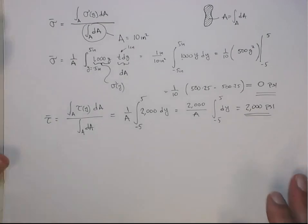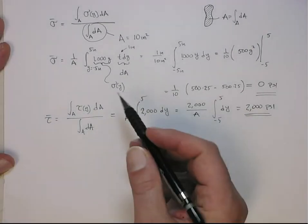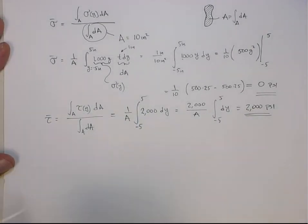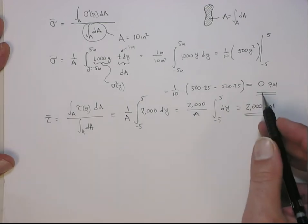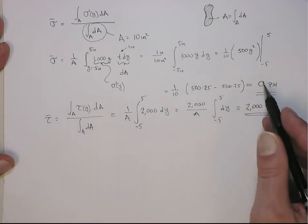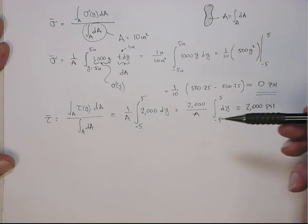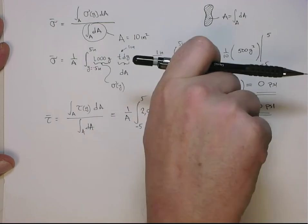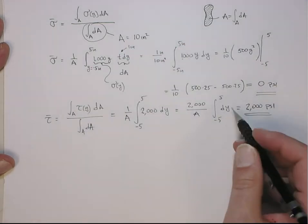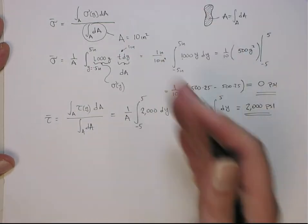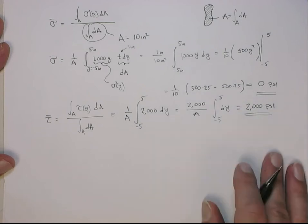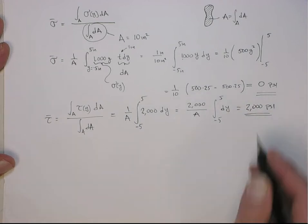Then we computed the average normal and the average shear on the face, so these were constant values. Even though there is a normal traction distribution across the face, the net or average value is zero because the bottom half was in compression and the top half was in tension. The shear force was constant and the average equals the point value, which was 2,000 psi.